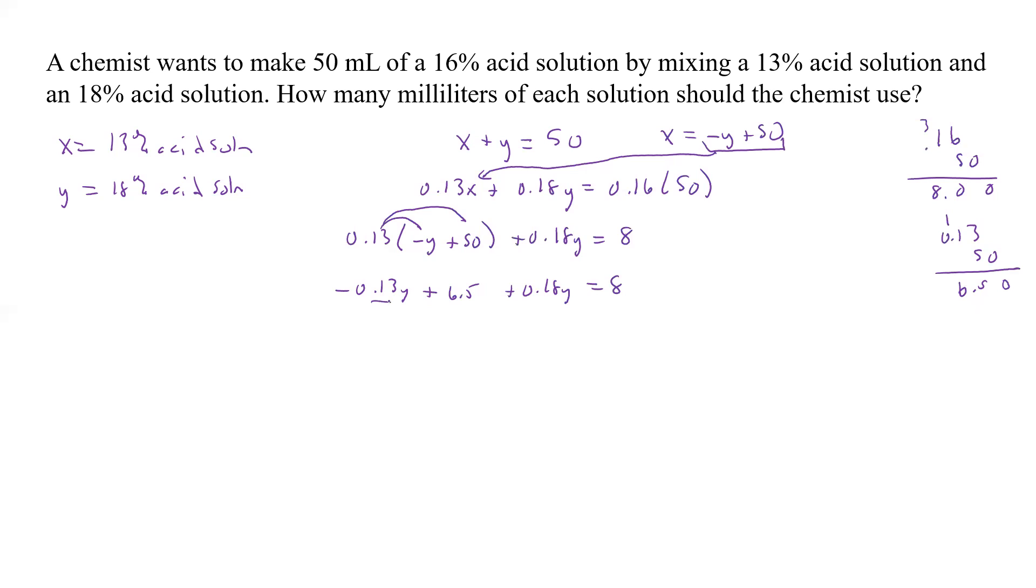Now we have a like term here and a like term here. So let's get rid of this 6.5. And so that becomes that, that's 10. And so if we add that all together, so that's a 5, that's a 1, and that's equal to, and here we have 0.18 minus 0.13 will be positive 0.05Y.